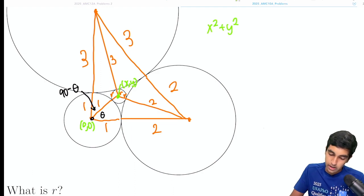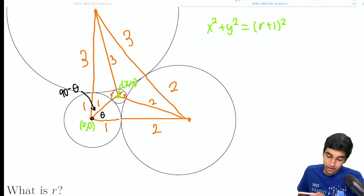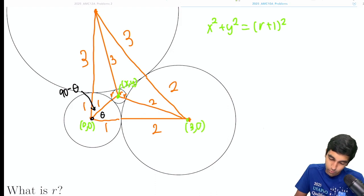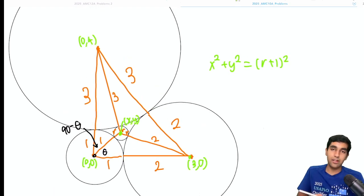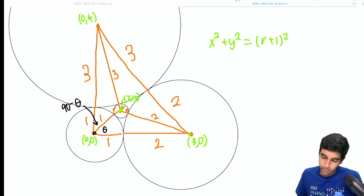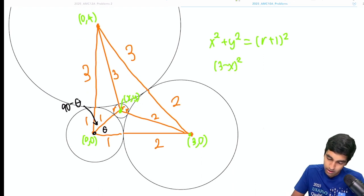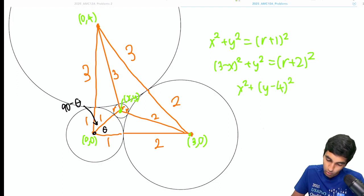So we have x squared plus y squared. The square root of that is r plus 1. So x squared plus y squared equals r plus 1 squared. And we get very similar conditions here. Let's say this is 3, 0. And that's what's really nice about coordinates is this right triangle makes it so nice and clean with coordinates. So 3 minus x squared plus y squared equals r plus 2 squared. And then x squared plus y minus 4 squared equals r plus 3 squared.